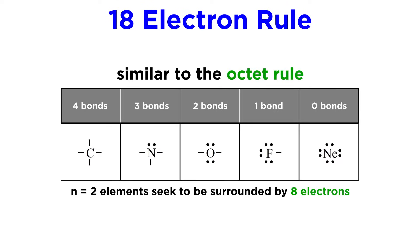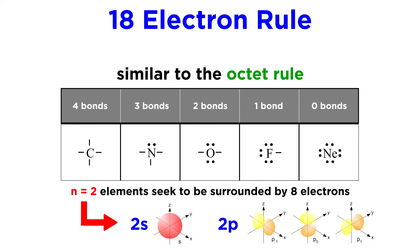This is a little bit like the octet rule, which says that certain elements in the second row of the periodic table — namely carbon, nitrogen, oxygen, and fluorine — will tend to behave in such a way so as to gain a full octet, or eight electrons around them, thus achieving noble gas electron configuration. This number eight is due to the fact that the n equals two shell can accommodate eight electrons, given that there is one s orbital and three p orbitals, which take two electrons each.